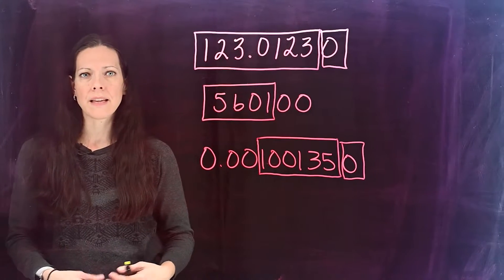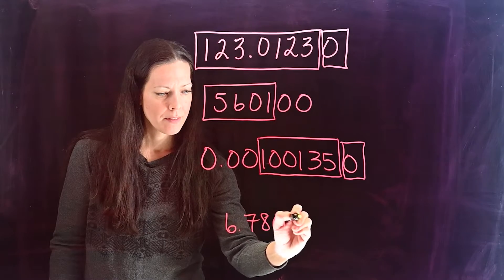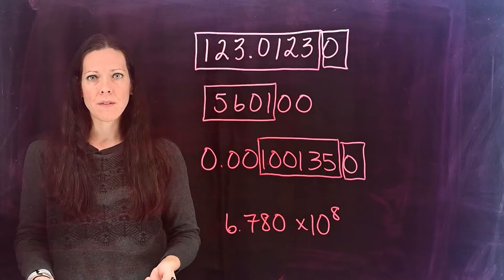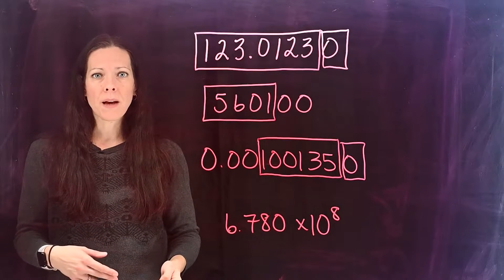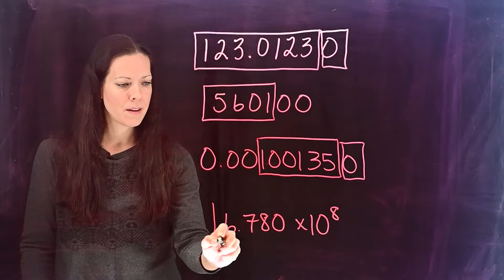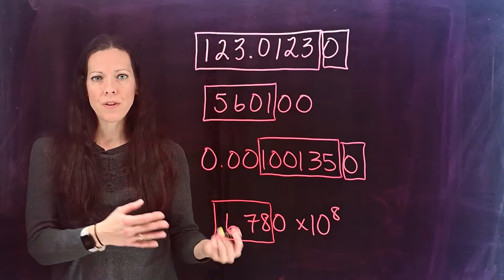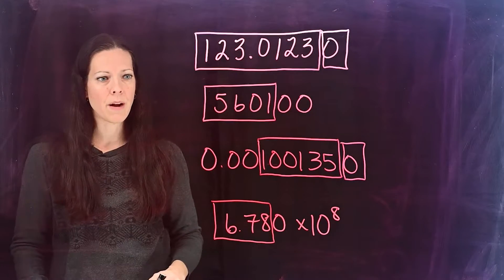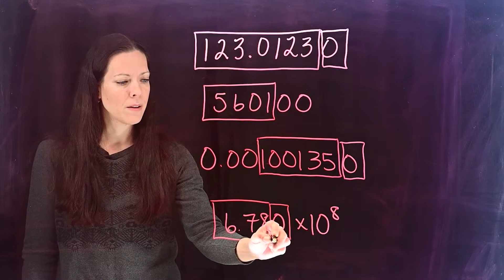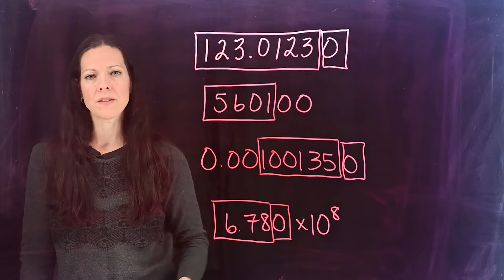Let's look at a number that's in scientific notation. We can still use the box and dot method with scientific notation numbers. We still box the leftmost non-zero digit all the way to the rightmost non-zero digit. If there is a dot, we still box the trailing zero — the zero or zeros all the way to the right. There is a decimal, there is a dot, so we're going to box the leftmost zero, which will also be included. This number would contain 4 significant digits.